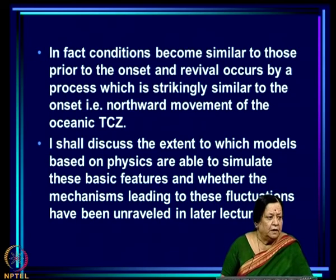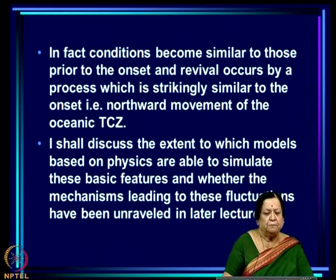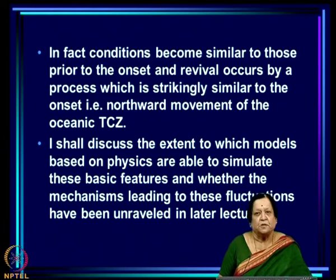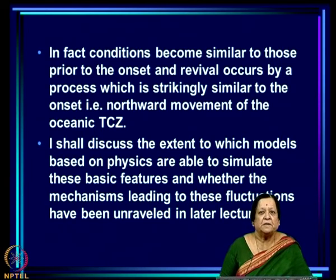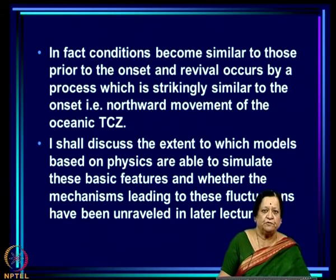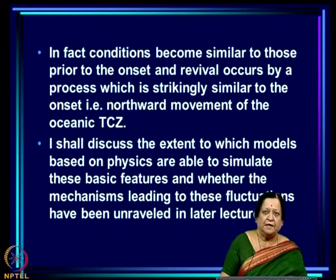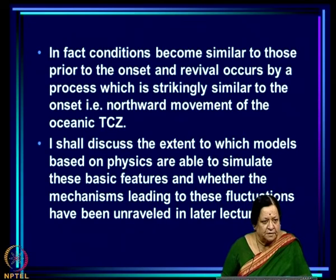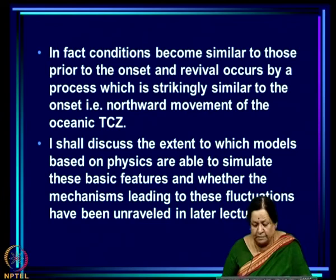This is a very interesting hypothesis proposed several years ago, but we have not yet been able to properly assess to what extent models simulate these basic features and whether the mechanisms leading to these fluctuations have been unravelled. This will be discussed in later lectures, but at this point it is good to note that we do have some ideas about why fluctuations occur in the TCZ and why there are fluctuations in monsoon rainfall on the intraseasonal scale.